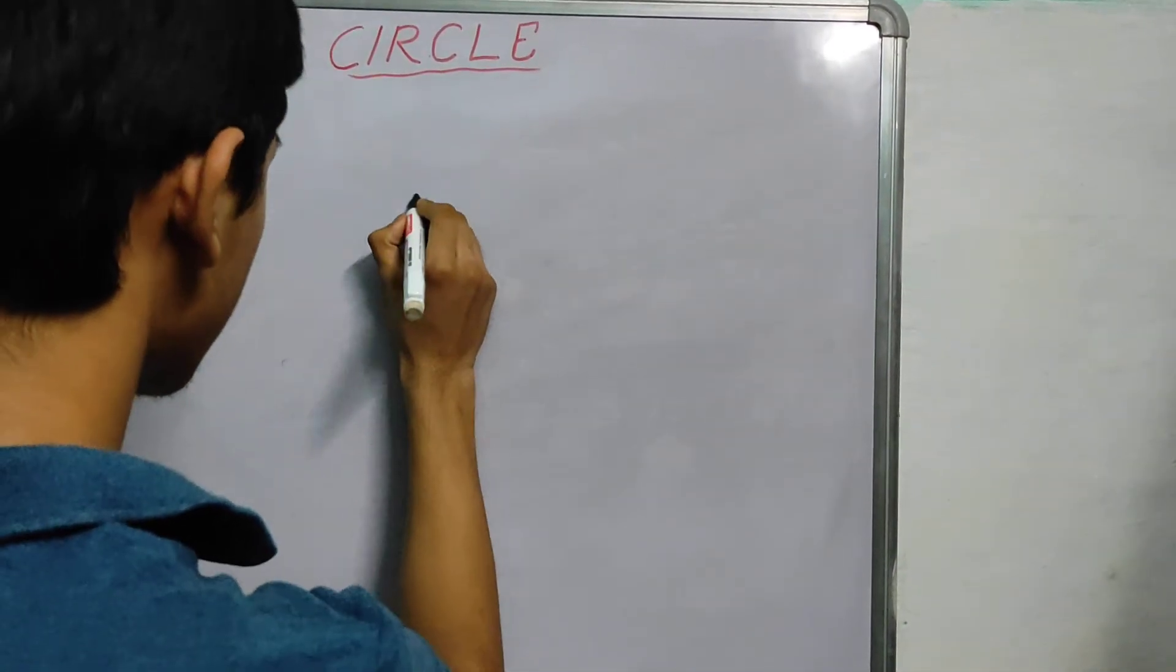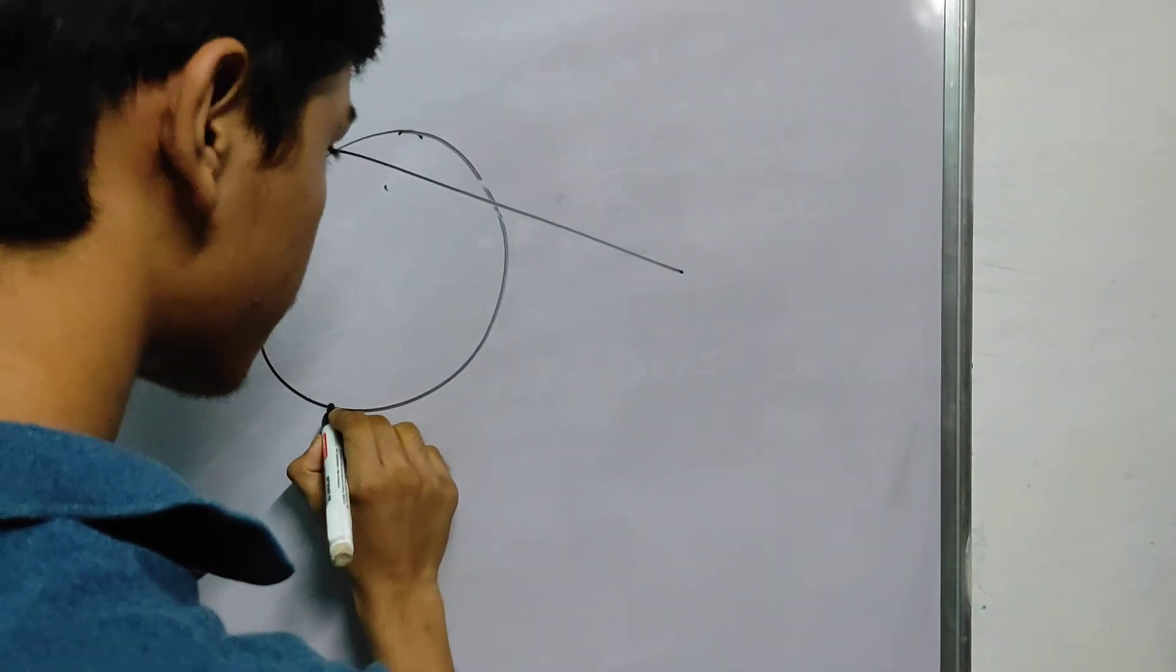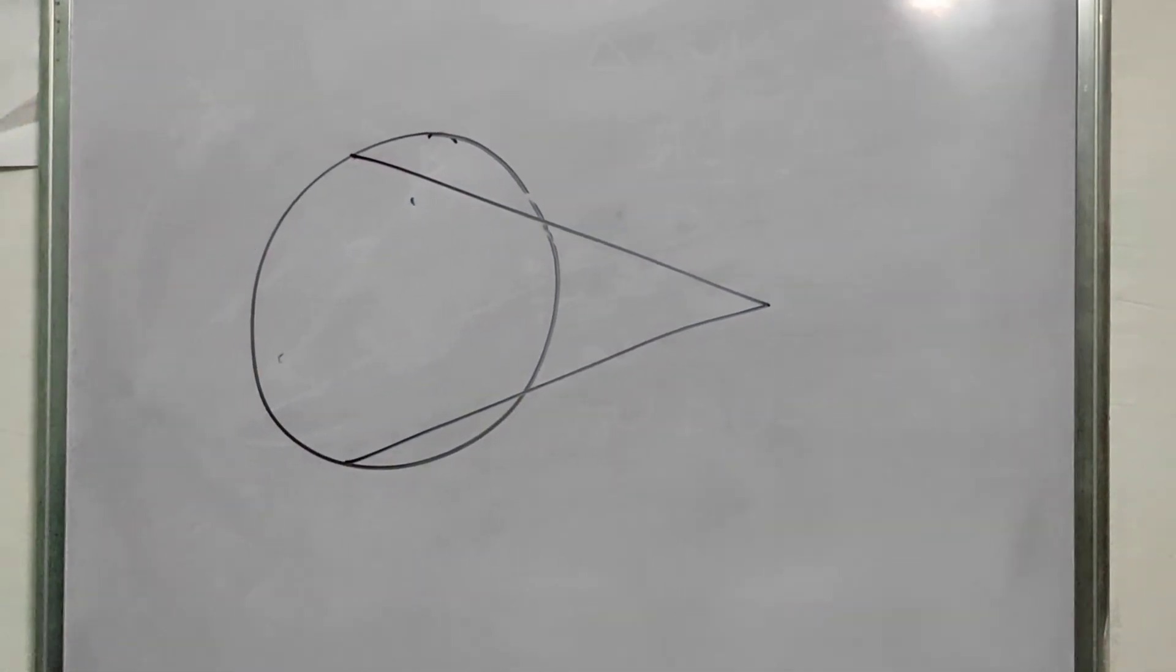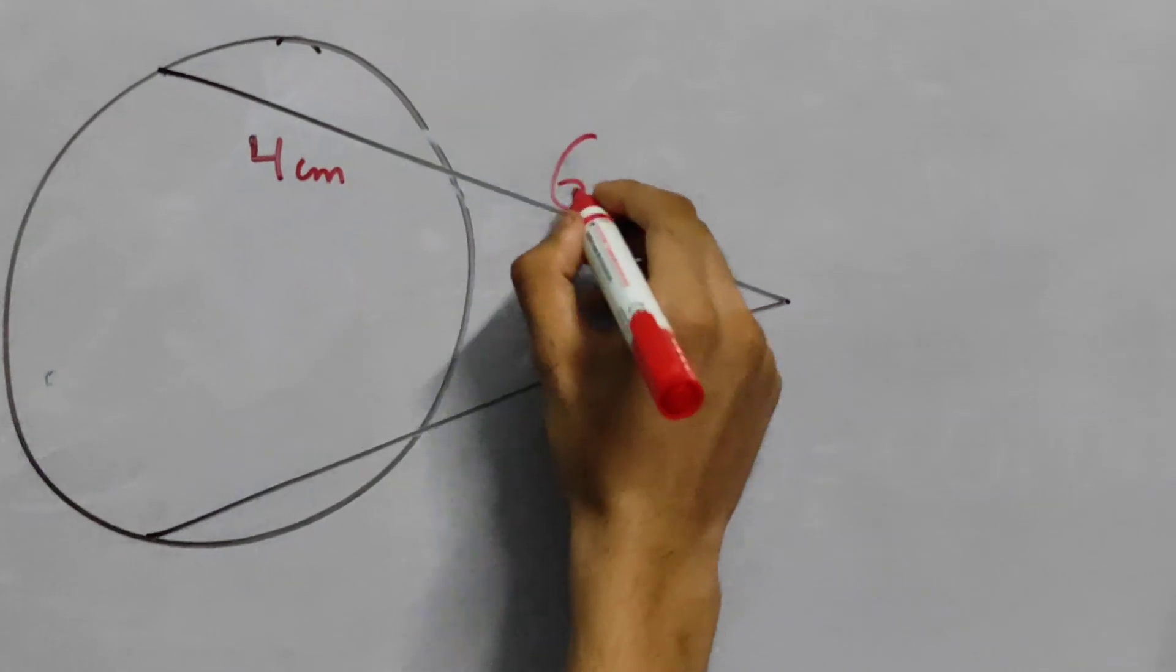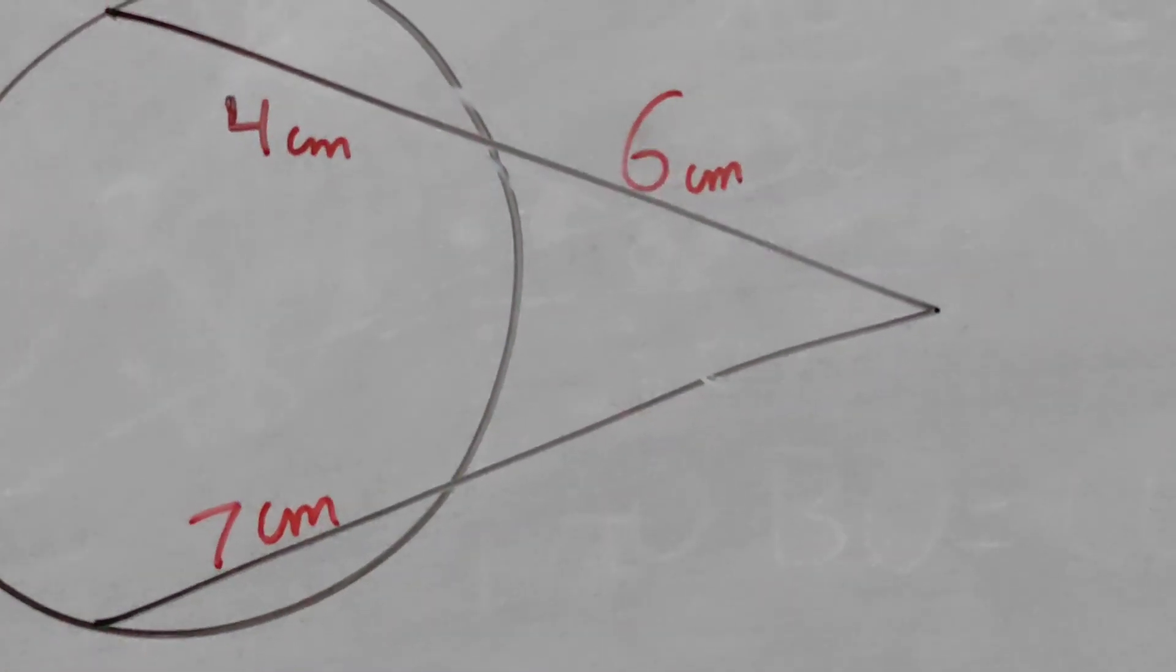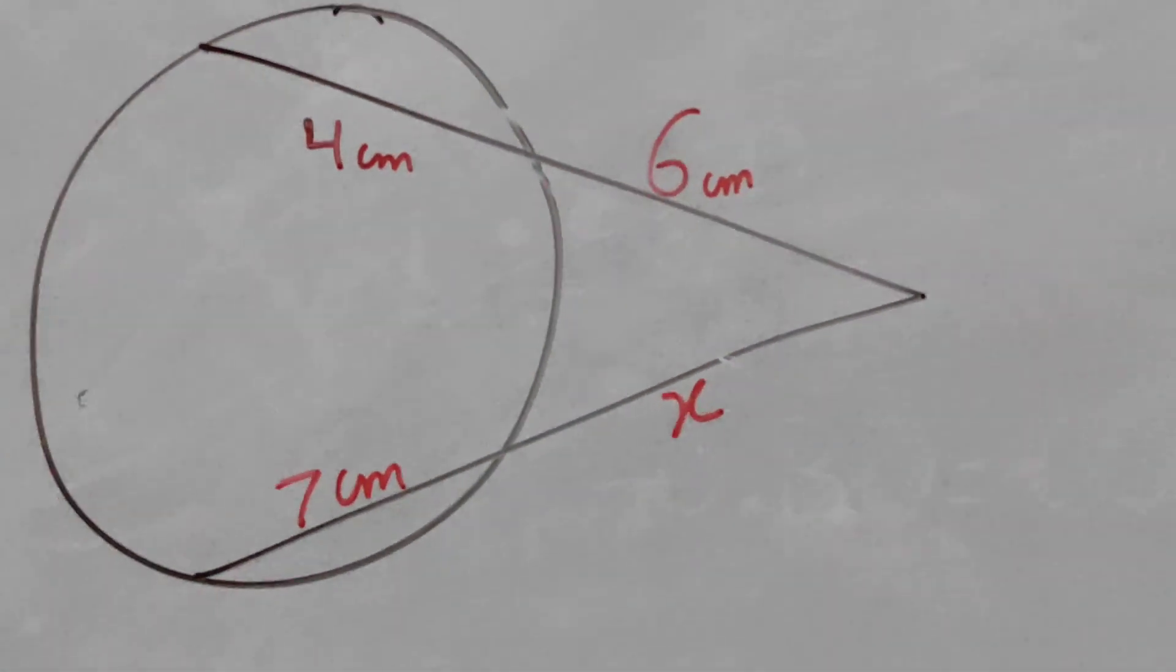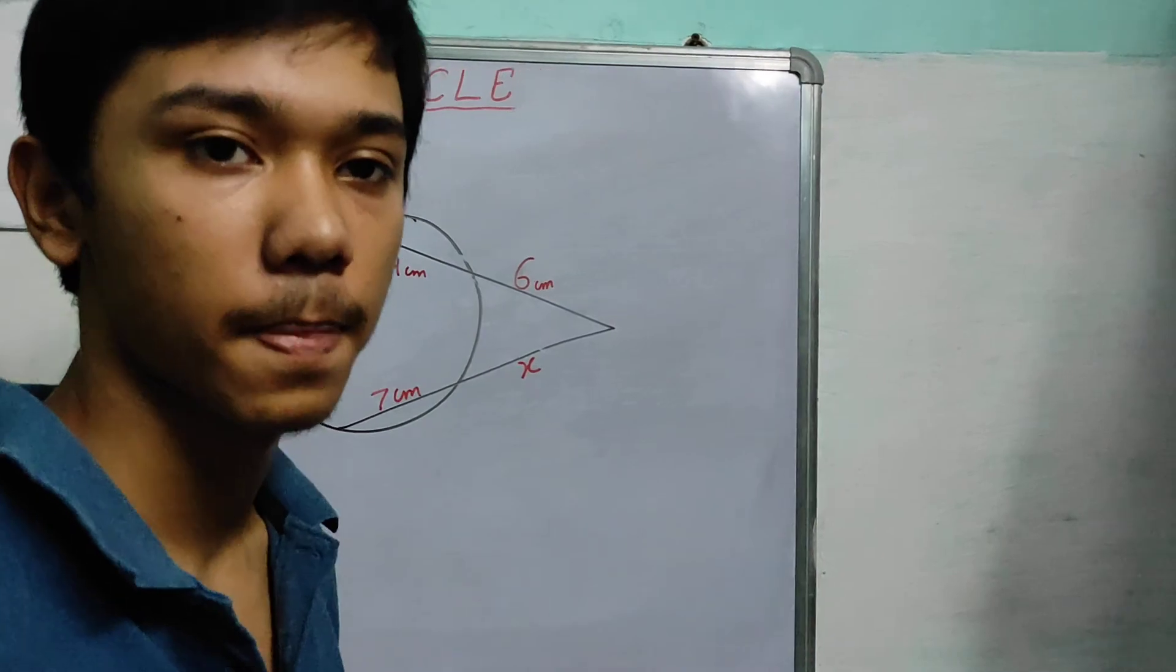Say in this circle, you have these two secants coming, and let me give you the values. This is, let's say, 4 centimeters, 6 centimeters, and this one as 7 centimeters. What is the value of, let's call this x? Try this, it's a very basic question, and write this in the comments box. So that's all, that's it for today, and as always, thanks for watching.